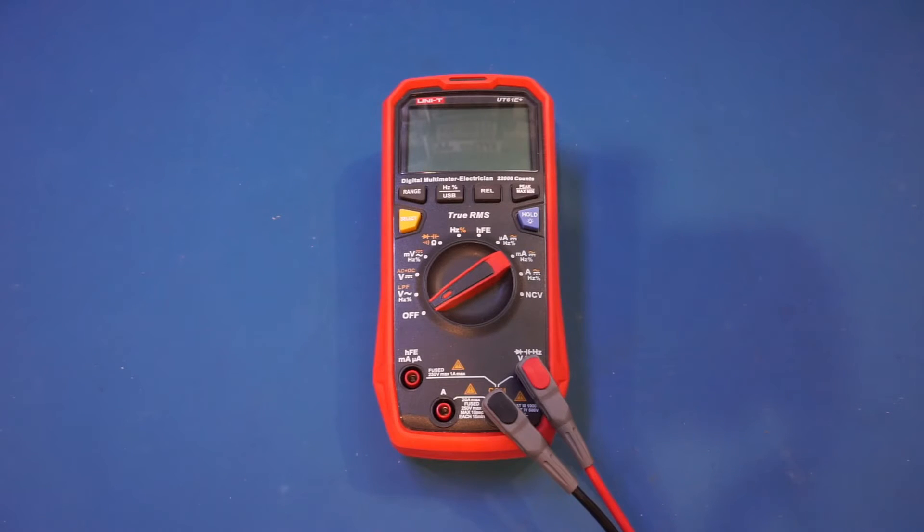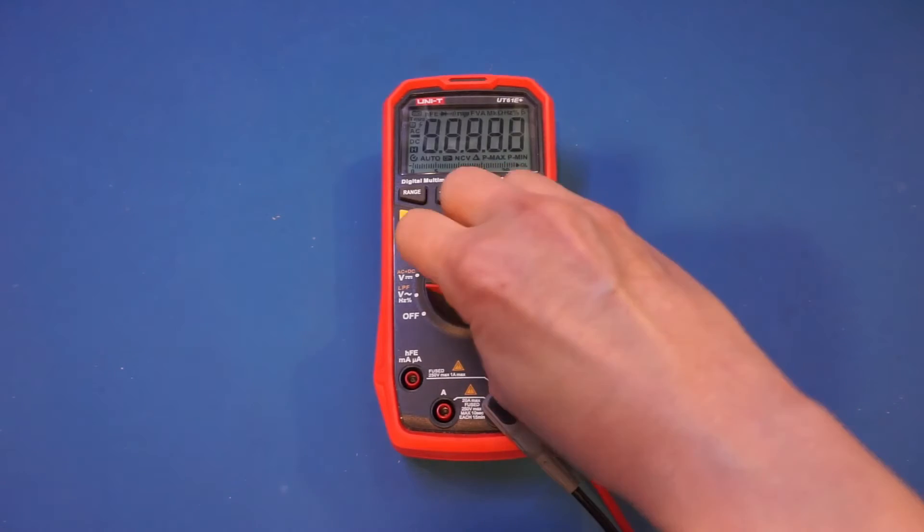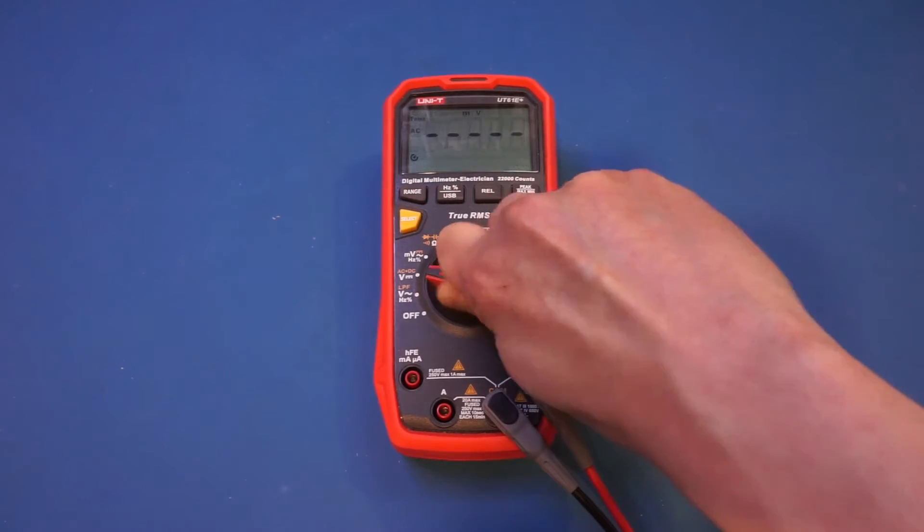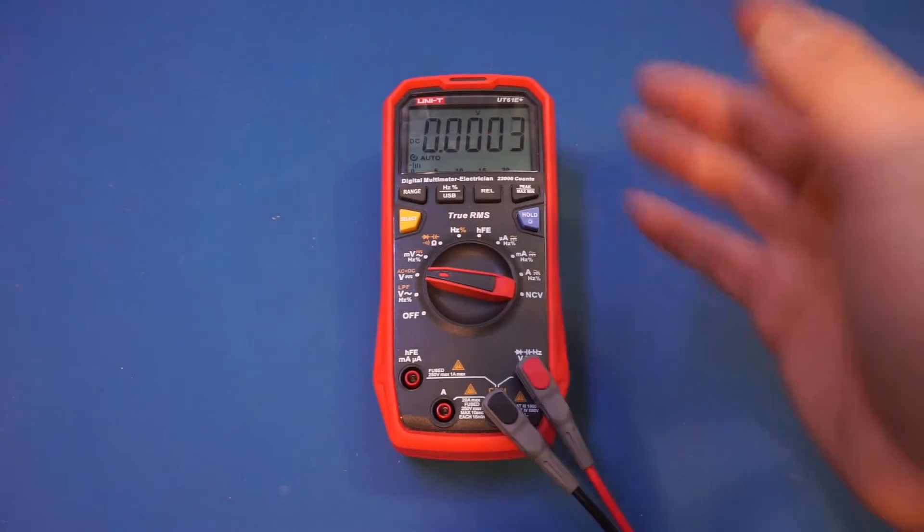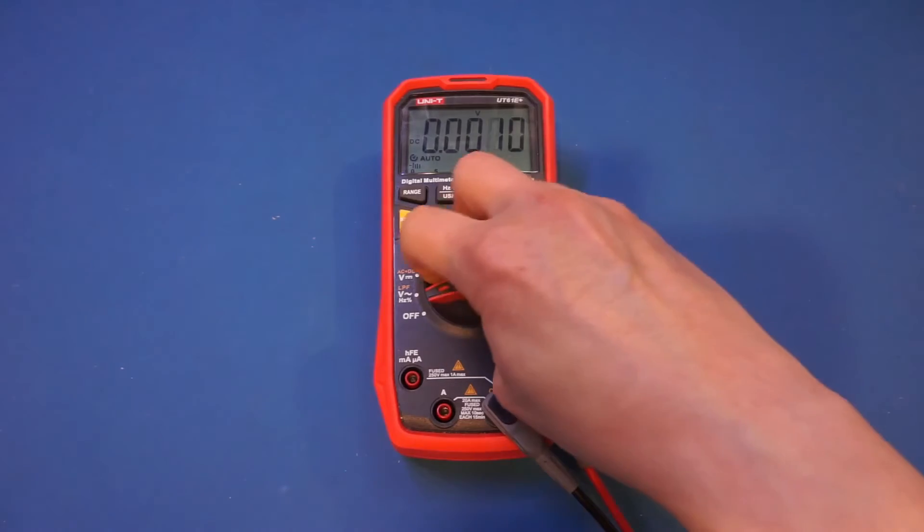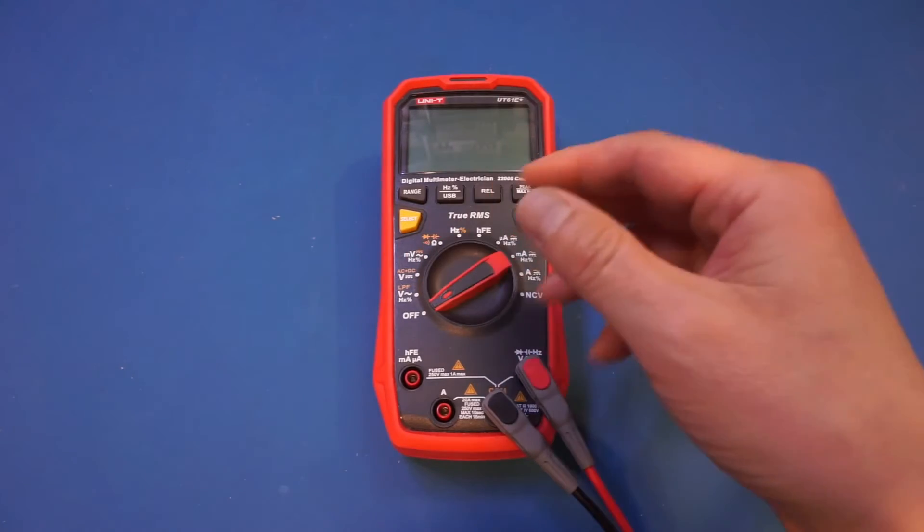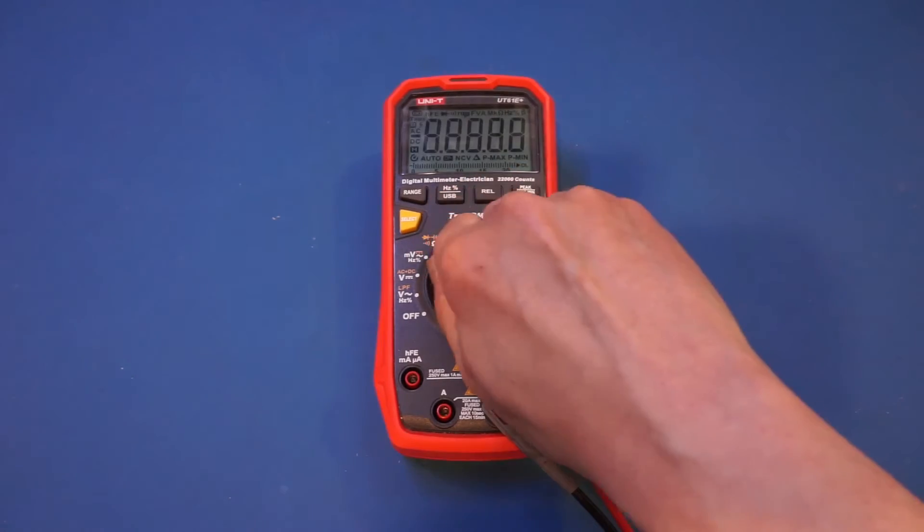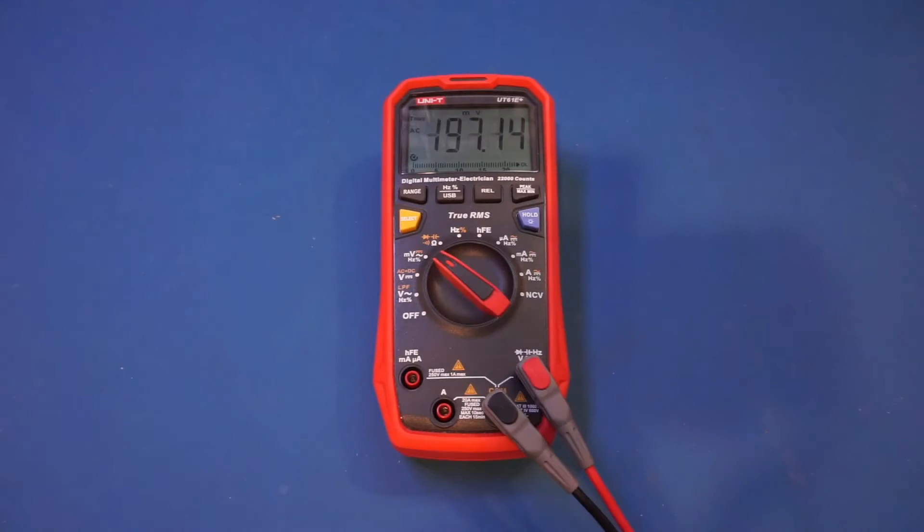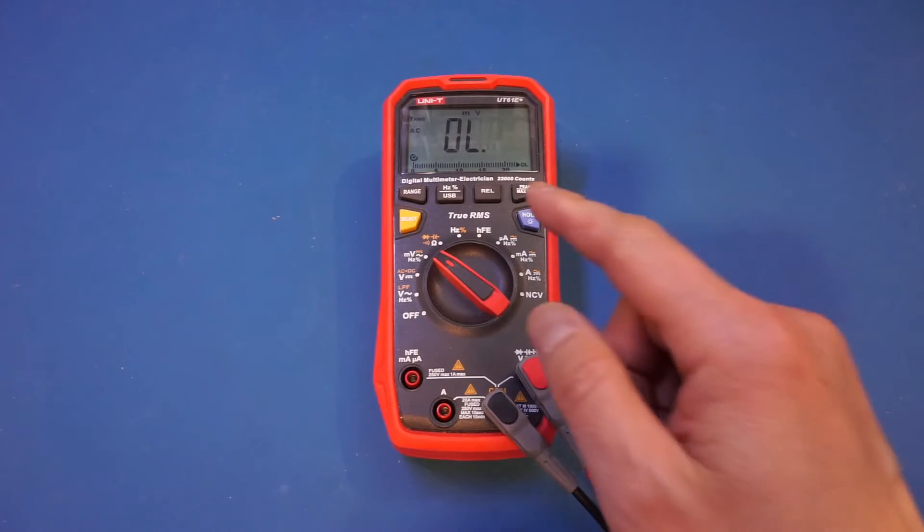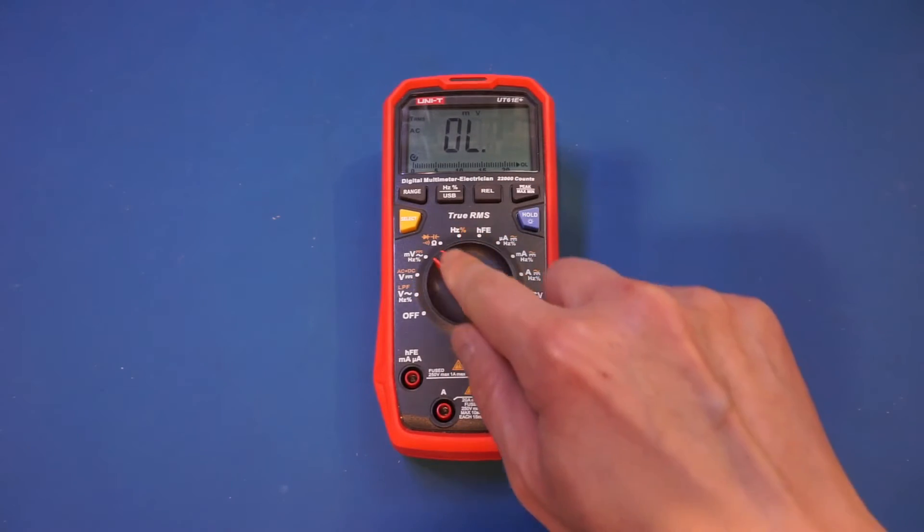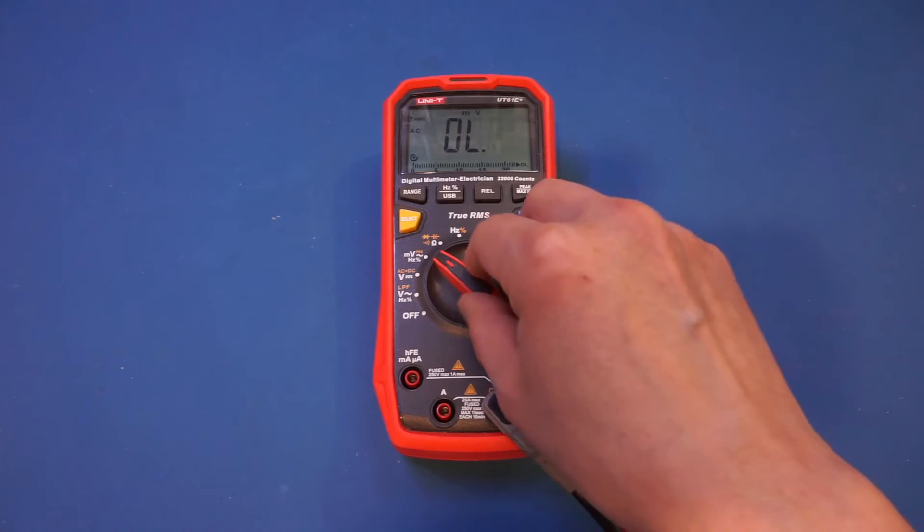The first thing I want to talk about is the range switch. This is perhaps one of the things that impacted my experience the most. It is hard to describe if you don't have this meter in your hand and experience it for yourself. How I would describe it is a little bit spongy and imprecise. You will occasionally find yourself in between ranges like what just happened here, and that's actually really annoying.